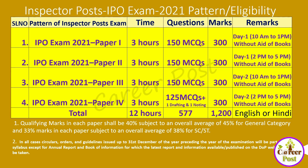Paper 4 is slightly different: 125 MCQs carry 250 marks at two marks each, and the remaining 50 marks are divided into two parts — 25 marks for drafting and 25 marks for noting. So drafting 25 plus noting 25 equals 50, and 125 MCQs into two marks equals 250, giving a total of 300 marks for Paper 4. Overall, the entire examination spans 12 hours across two days, with 577 questions in all and a total of 1200 marks.